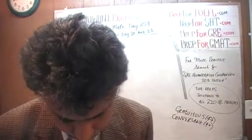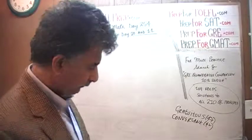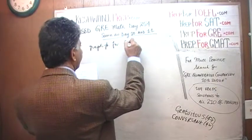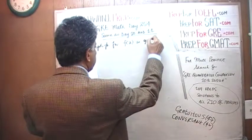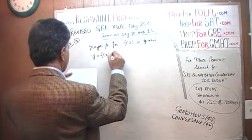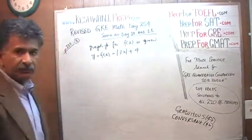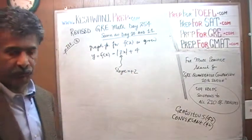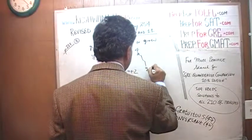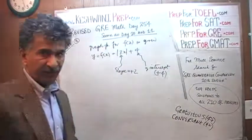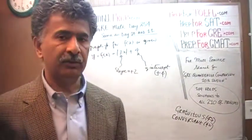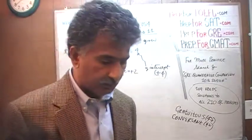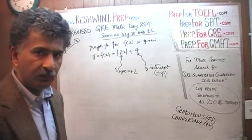Problem number 3 on page number 118. We are given a graph; we are told that the graph for function f(x) is given. The function f(x) looks like this: absolute value of 2x plus 4. The very first thing we need to understand is that the 2 there is the slope — slope equals 2. This graph has a slope of positive 2. We also notice that the y-intercept is positive 4. So we have a slope of 2 and a y-intercept of positive 4. This is very important information we will need later as we solve the problem.